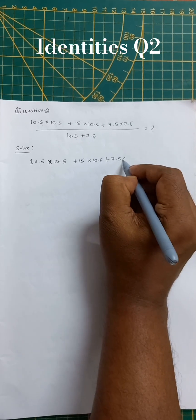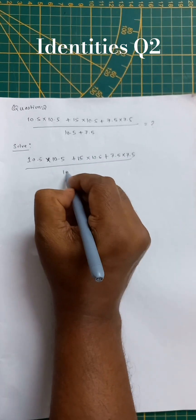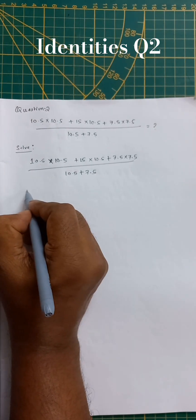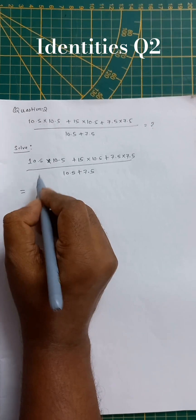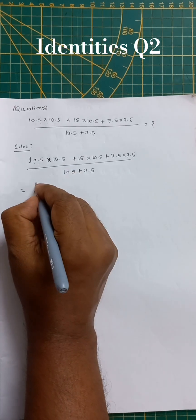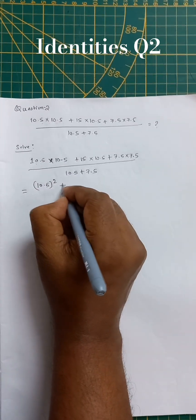So let's see, 10.5 into 10.5 is 10.5 whole square, plus, divided by 10.5 plus 7.5.